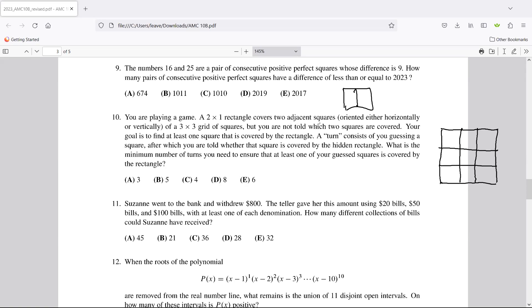And we're going to be placing a two by one rectangle in there, two adjacent squares. But you're not told which two squares are covered. It's basically you're not able to see it. Your goal is to find at least one square that is covered by the rectangle. A turn consists of you guessing a square, after which you're told whether or not that square is covered by the hidden rectangle. If you understand what's happening, this is essentially the game of Battleship.